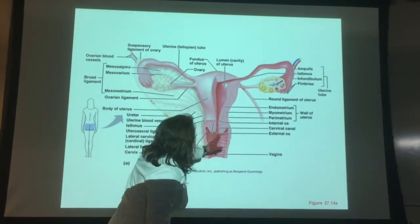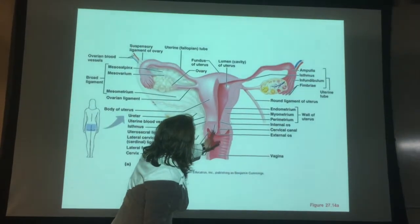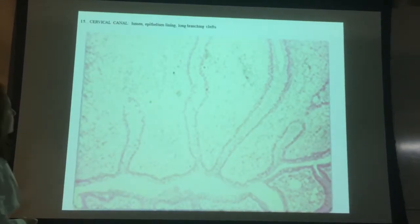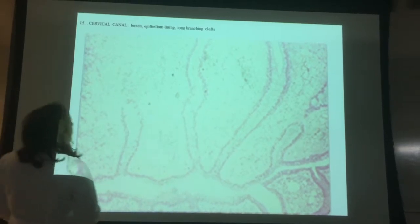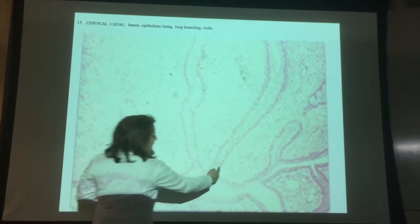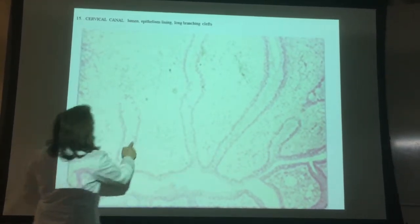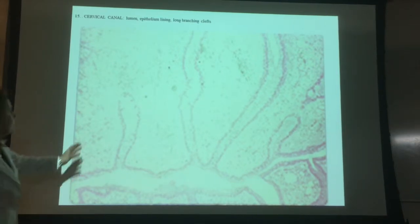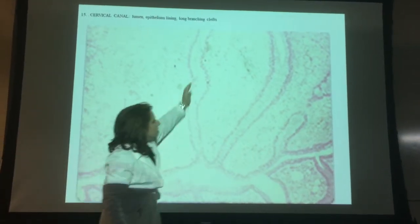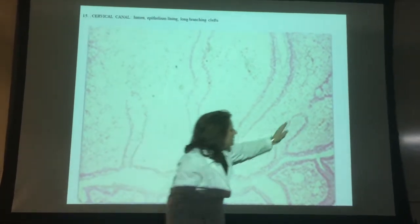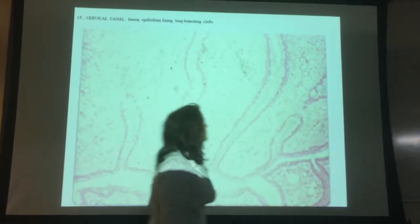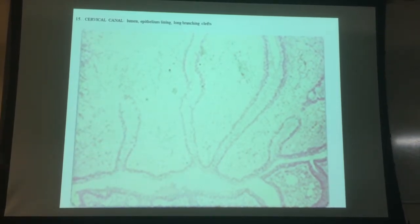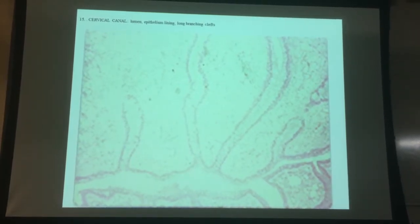The cervical canal — this is where the cervix is here. This is the cervical canal and the lining is over here. You have clefts — clefts are like hidden areas, dip-in areas — they're the long-branching clefts. If you just call it a cleft, that's good enough. And this would be the whole lumen area right here.